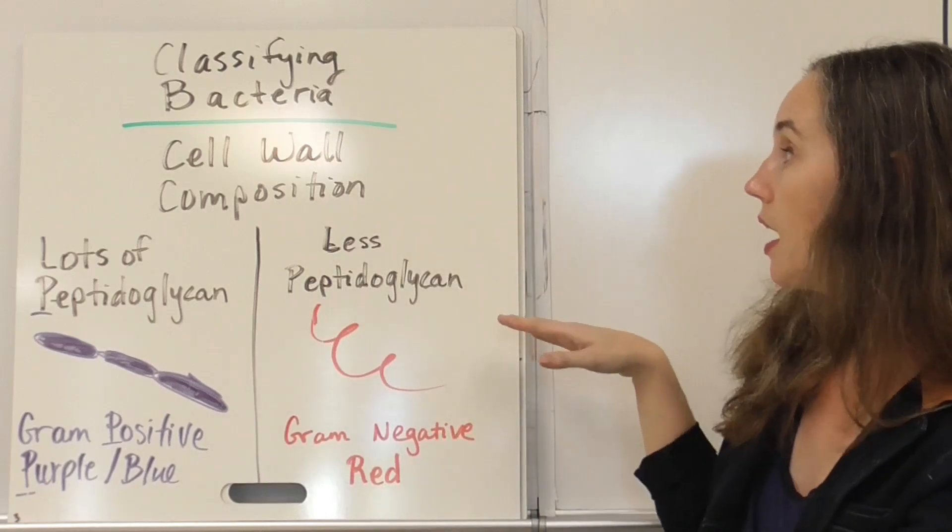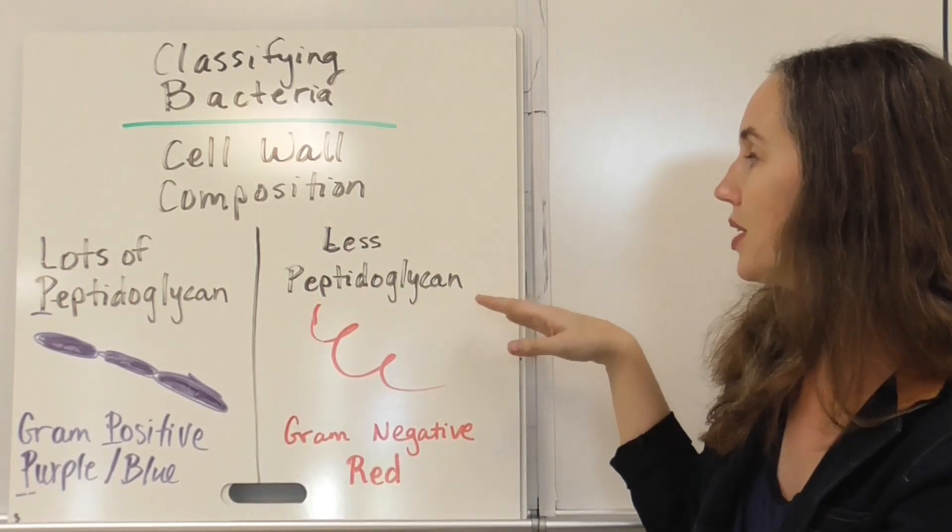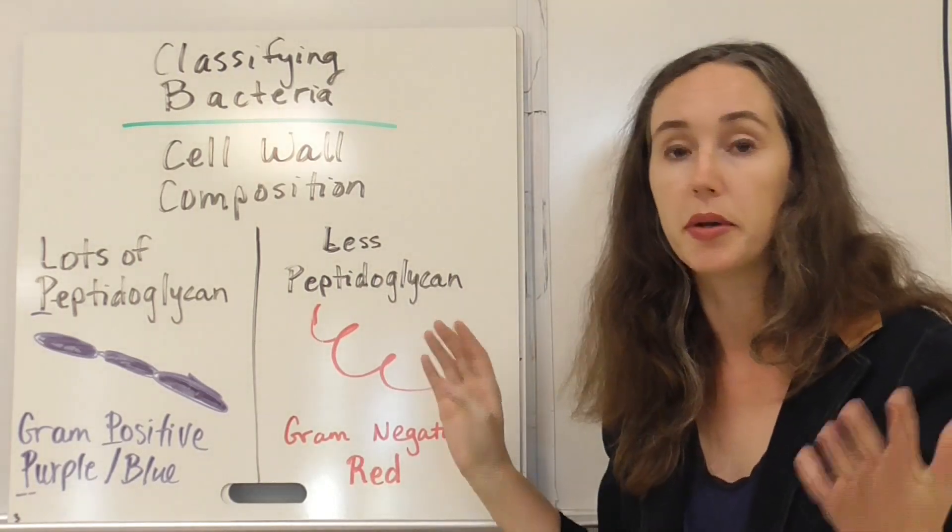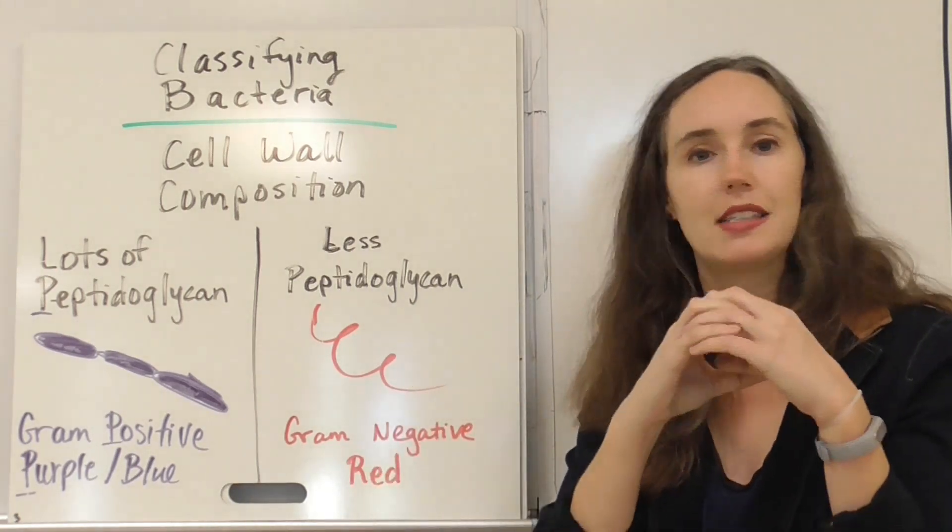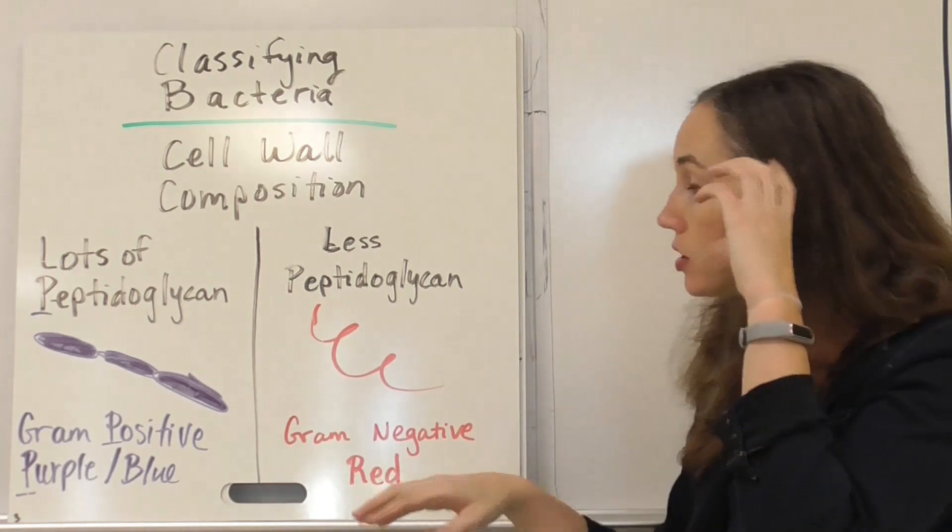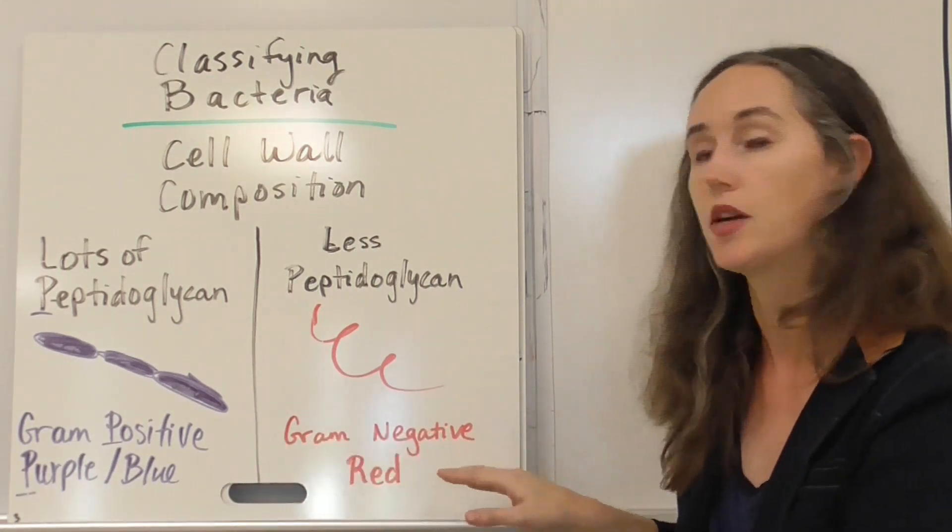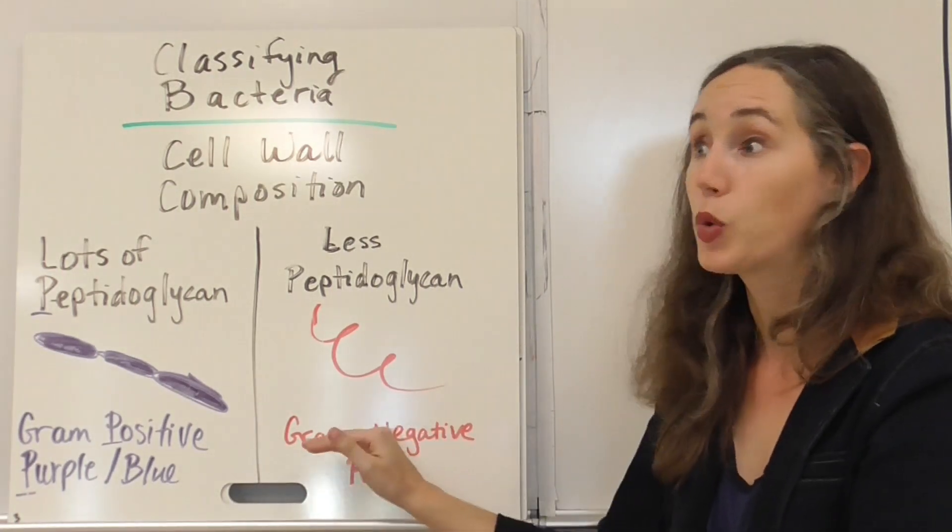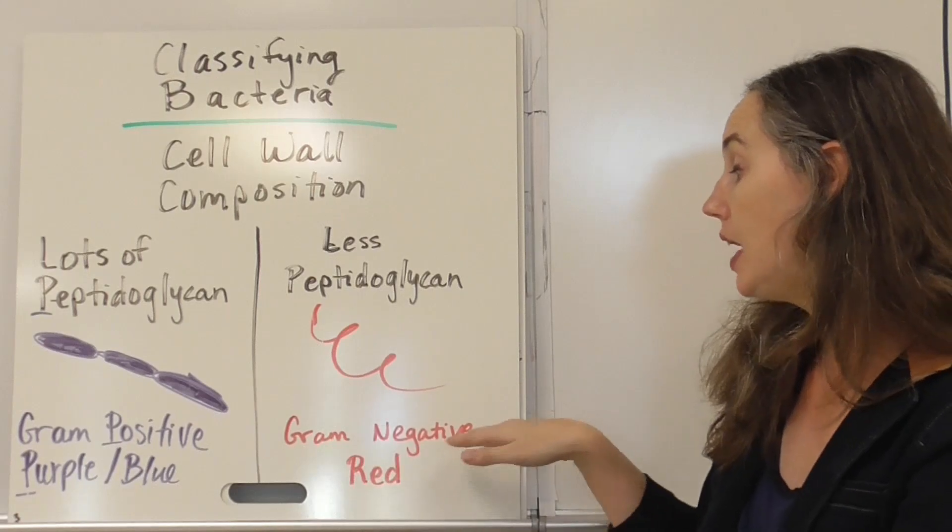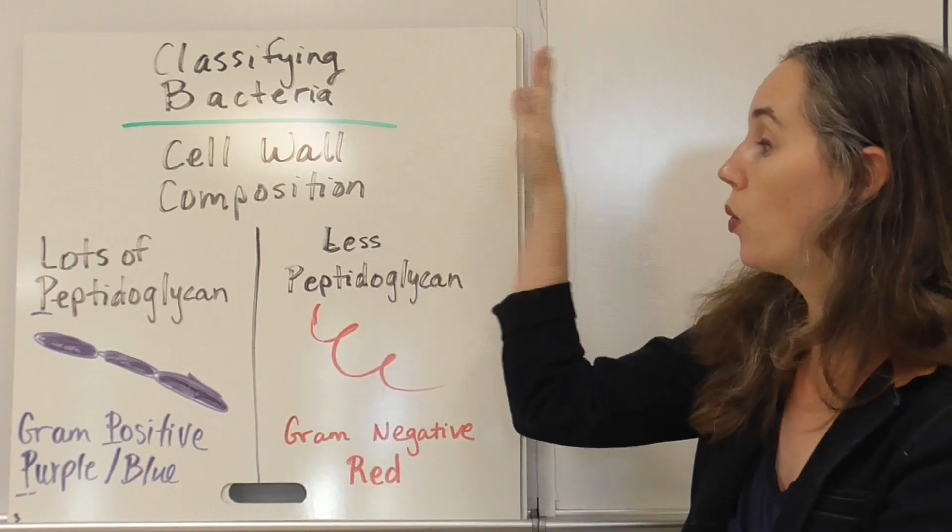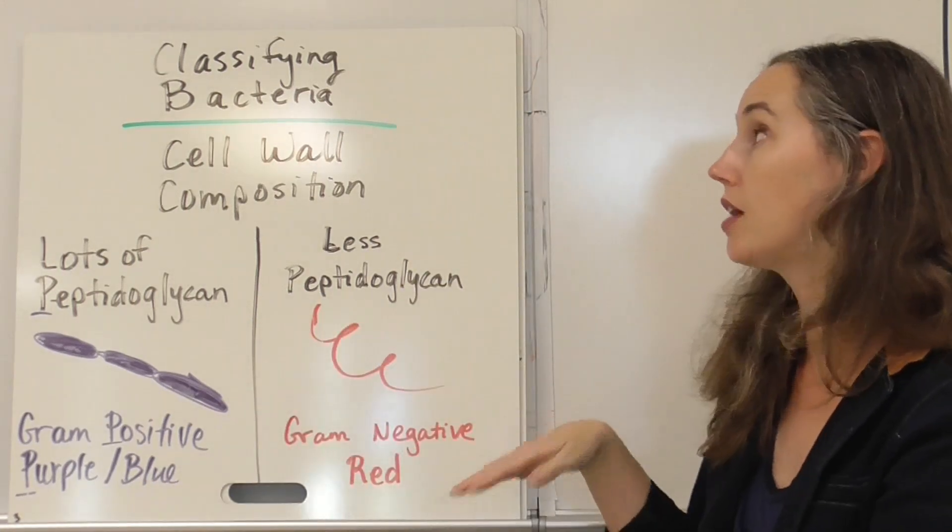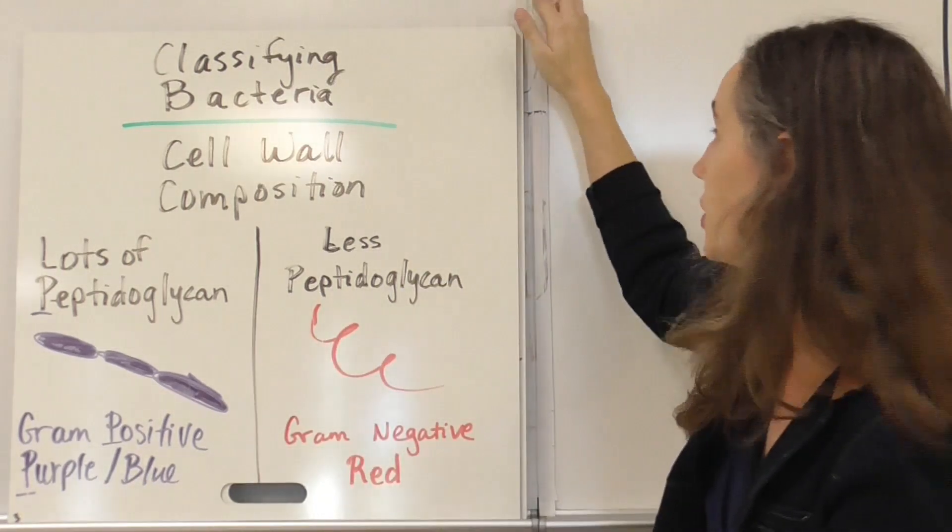On the other hand, if it's a bacteria with less peptidoglycan, I mean it has some, but not nearly as much, that crystal violet isn't going to stick in there so much. So that's going to be gram negative. When you run that gram test, the crystal violet is not going to stick in there. And so it'll be red. You'll see it as red under a microscope. So whether it's gram positive or gram negative is the second way to classify bacteria.